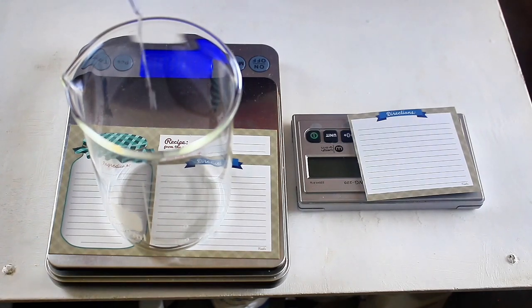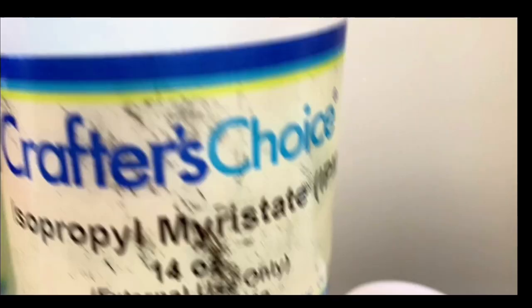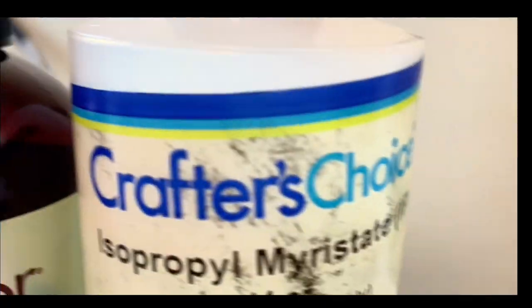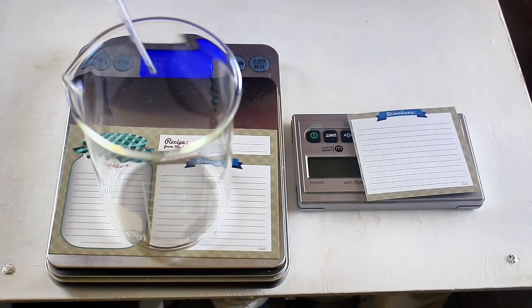I'm adding my second ingredient to the oil phase. And this is 4 grams of IPM, or isopropyl myristate. This is very skin-conditioning, emollient, and is also slightly occlusive. Next, I add 6 grams of fractionated coconut oil, or they're sometimes referred to as mid-chain triglycerides.